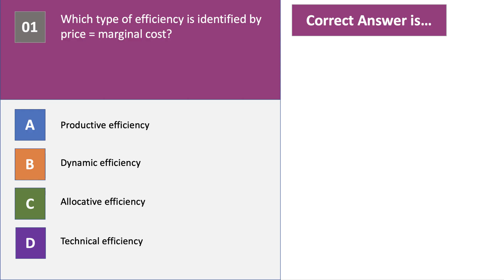Here's question one. Which type of efficiency is identified by price equals marginal cost? Take a moment to press the pause button and think about your answer to question one.